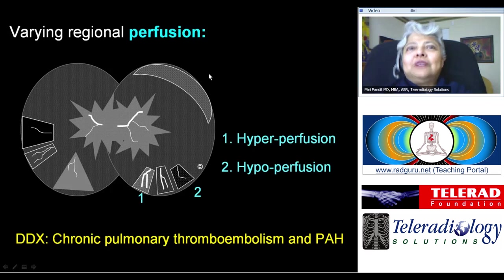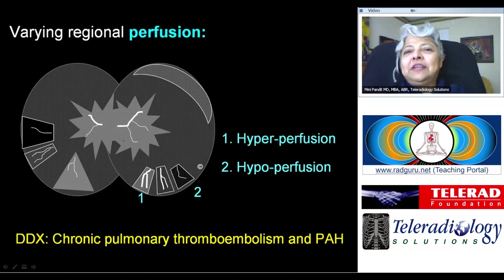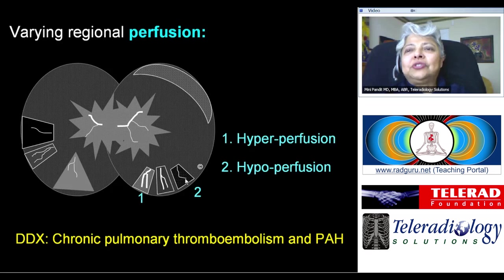Coming on to regional differences in perfusion giving rise to heterogeneous lungs. There are two basic scenarios: you can get hyperperfusion, where the area will be denser and blood vessels prominent; and you can get hypoperfusion, where you will have a relatively lucent area with attenuation of the blood vessel. The two main differential diagnoses to consider are chronic pulmonary thromboembolism and pulmonary arterial hypertension.